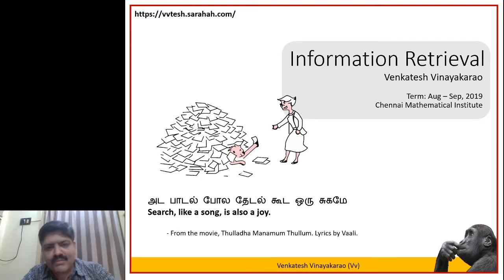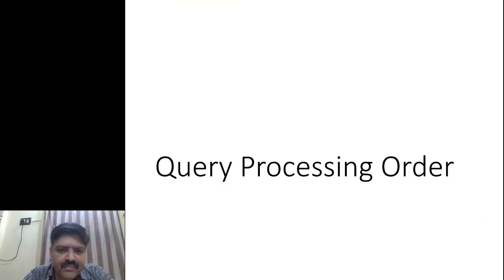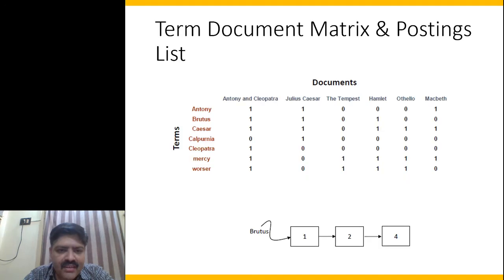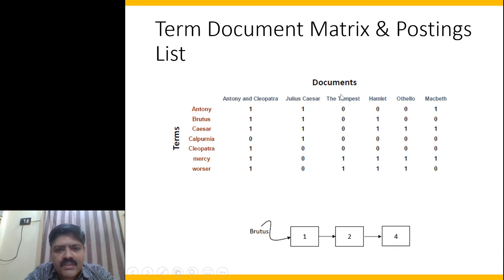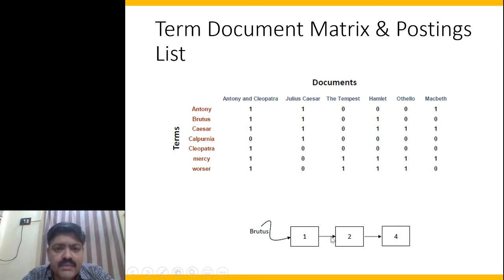Hello and welcome to today's session on information retrieval. Our topic today is query processing order. So far we know that terms and documents can be represented as a term-document matrix and even better as a postings list. Once we have our index, the next question is how do we match the query to this index.